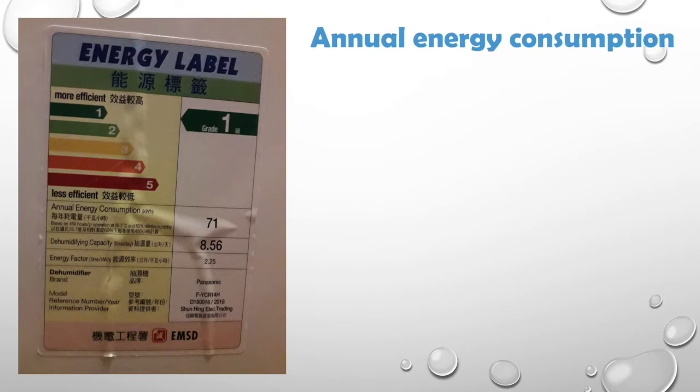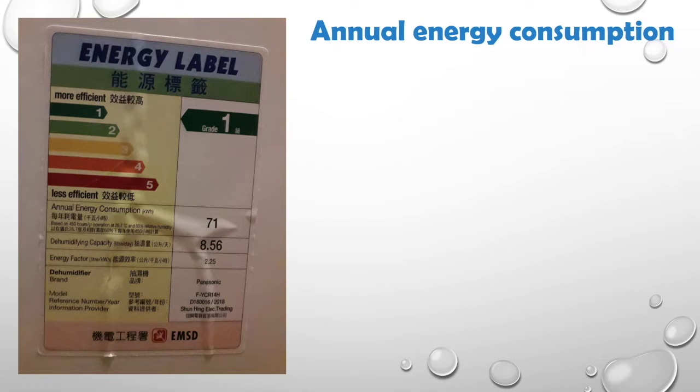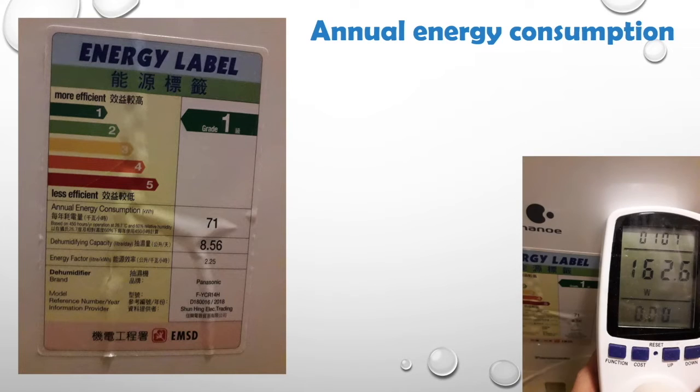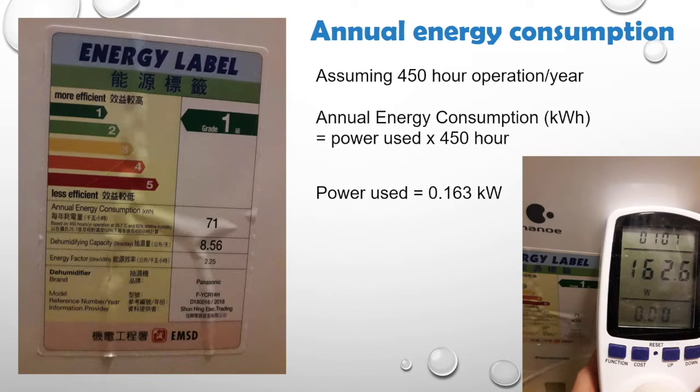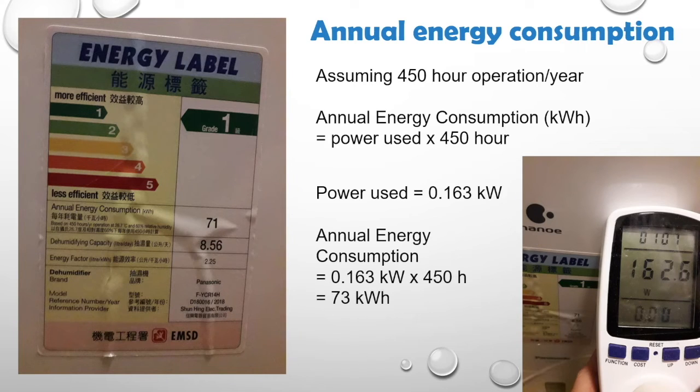For the power usage, we can plug the dehumidifier into a power meter like this one. We can see that the power use is 163 W. Since the annual energy consumption is calculated assuming a 450 hours operation per year, the annual energy consumption in our experiment turns out to be 73 kWh, which is quite close to the 71 kWh as specified on the energy label.